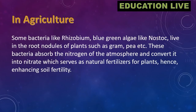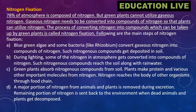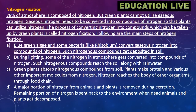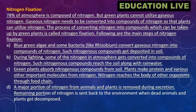These bacteria absorb nitrogen from the atmosphere and convert it into nitrates, which serve as natural fertilizers for plants, enhancing soil fertility. Nitrogen fixation: 78% of the atmosphere is composed of nitrogen, but green plants cannot utilize gaseous nitrogen. Gaseous nitrogen needs to be converted into compounds of nitrogen so that plants can utilize it. The process of converting nitrogen into compounds which can be taken up by green plants is called nitrogen fixation.